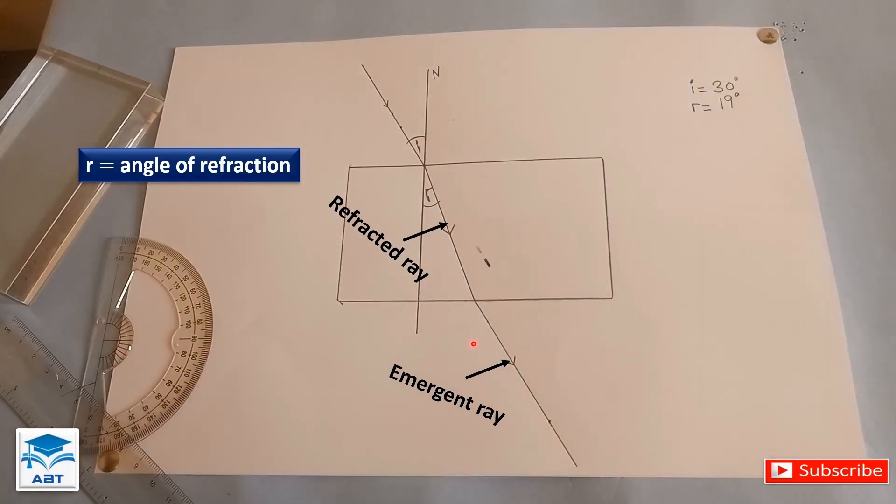Now this is the original part of the incident ray and when it moved from air, a less dense medium, to glass, a dense medium, it slowed down and refracted towards the normal. And also when light exits a dense medium, it speeds up and bends away from the normal.